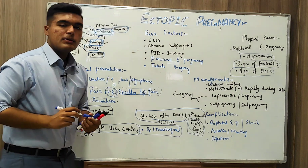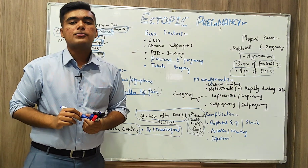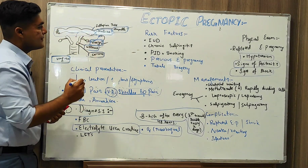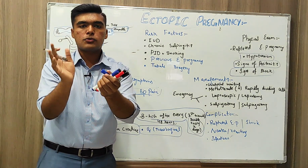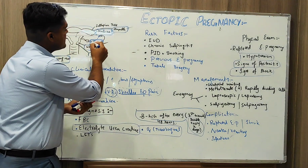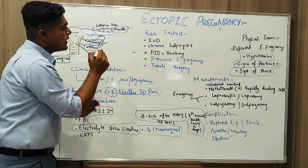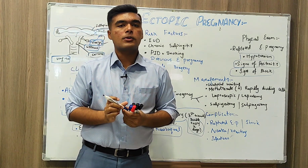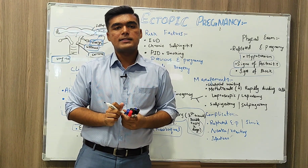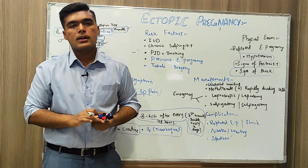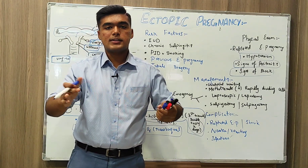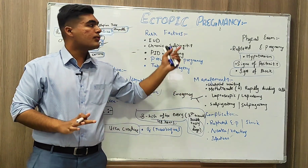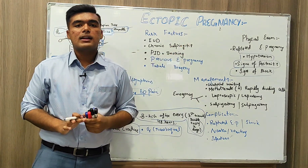Normally, after fertilization the egg travels through the fallopian tube and implants itself in the uterus. In the case of ectopic pregnancy, it travels in the fallopian tube, but due to some anomalies or abnormalities it implants itself in the fallopian tube — in 90% of cases it implants in the fallopian tube, or in any place outside the uterus. That is how ectopic pregnancy occurs.